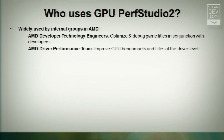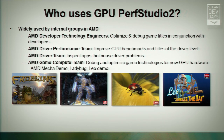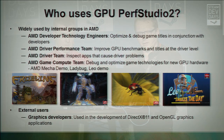Who uses it? It's widely used inside AMD by the AMD developer technology engineers — the guys that go out into games companies and optimize and debug game titles in conjunction with developers. The AMD driver performance team improves GPU benchmarks and titles at the driver level. The AMD driver team uses the tool to inspect apps that cause driver problems and rendering issues. The AMD game compute team creates tech demos for new GPU hardware. And of course, the most important group are the external graphics developers who use the tool in the development of DX11 and OpenGL graphics applications.